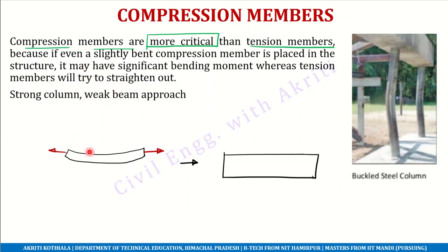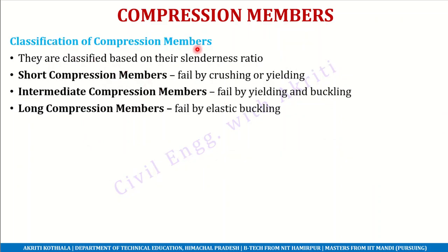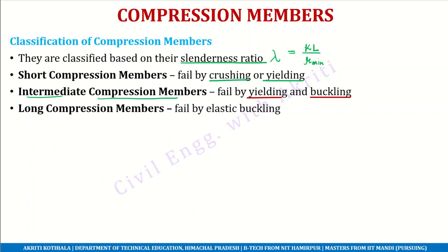Next is the classification of compression members. They can be classified on a slenderness ratio basis, where slenderness ratio equals KL divided by R minimum. A short compression member will fail by crushing or yielding. An intermediate compression member will fail by a combination of yielding and buckling.